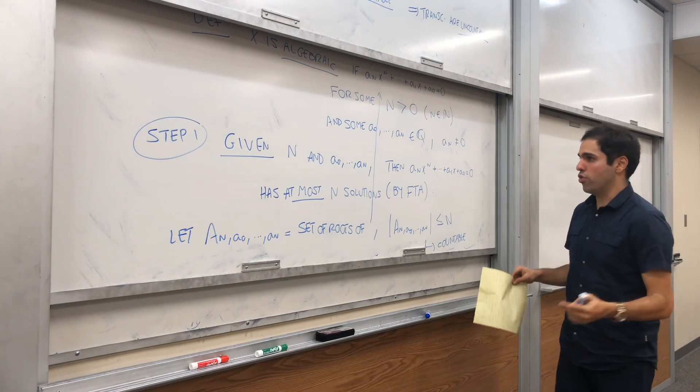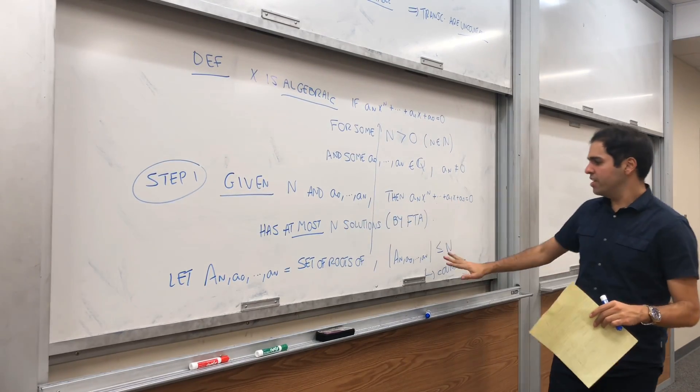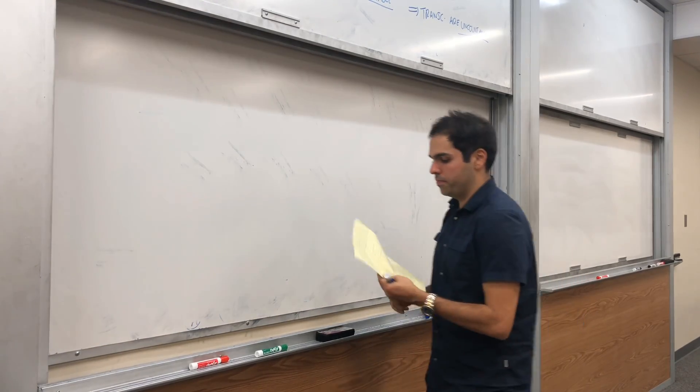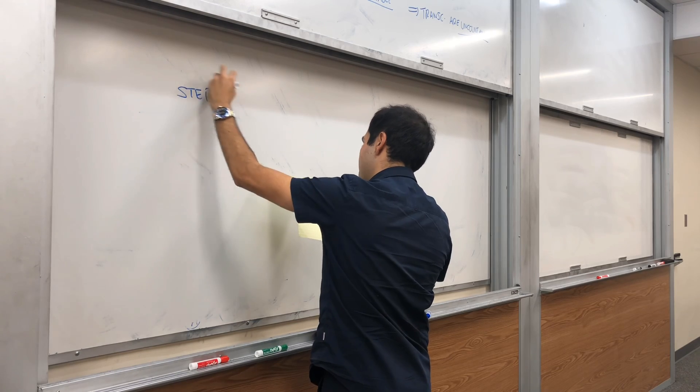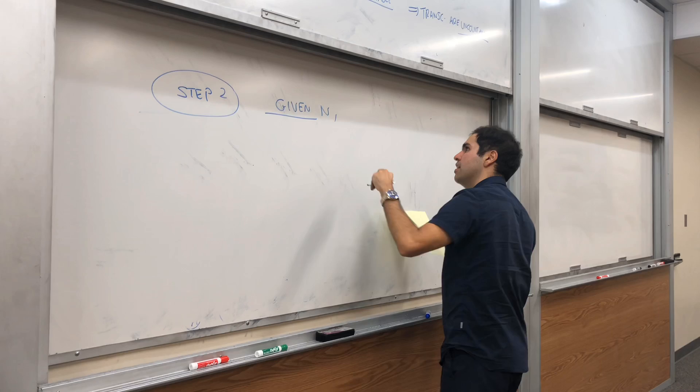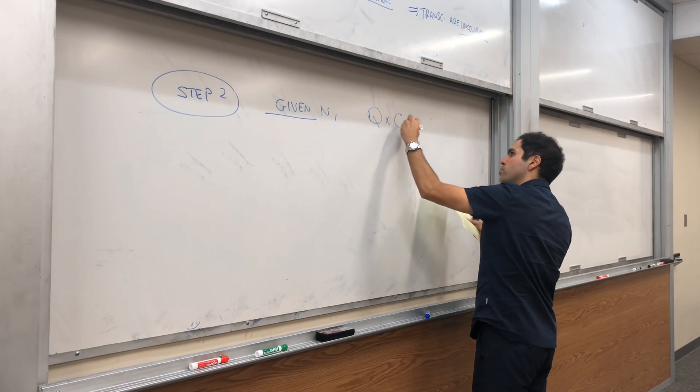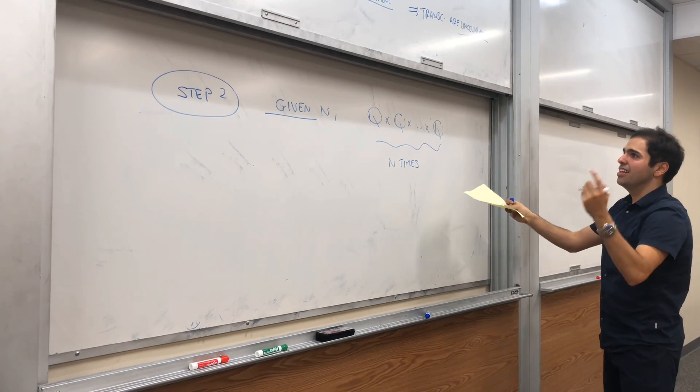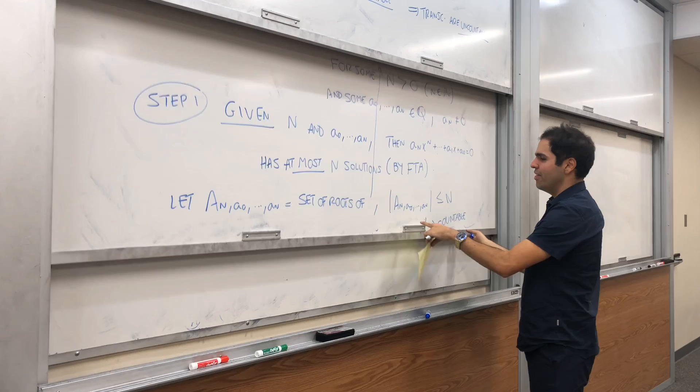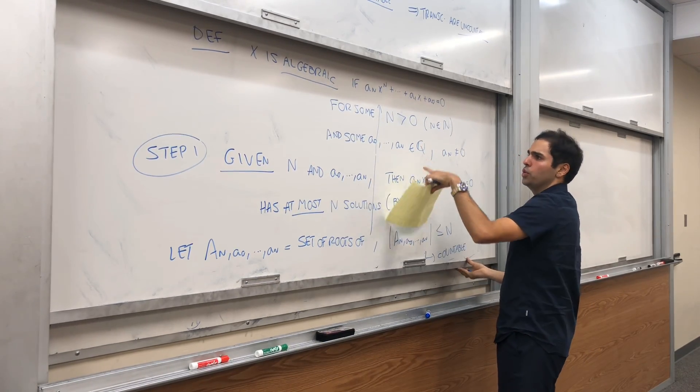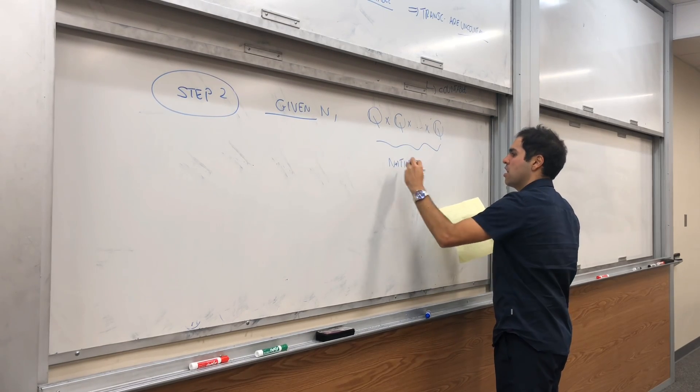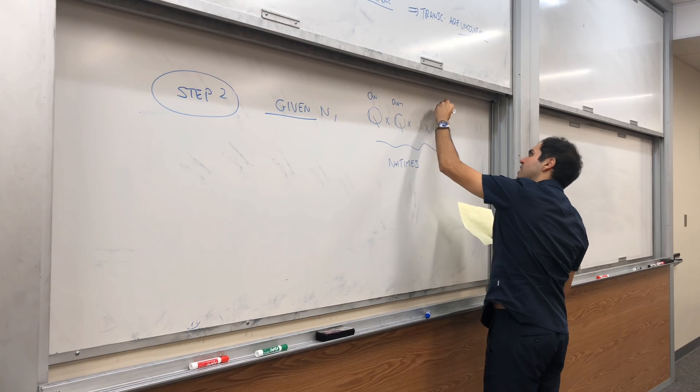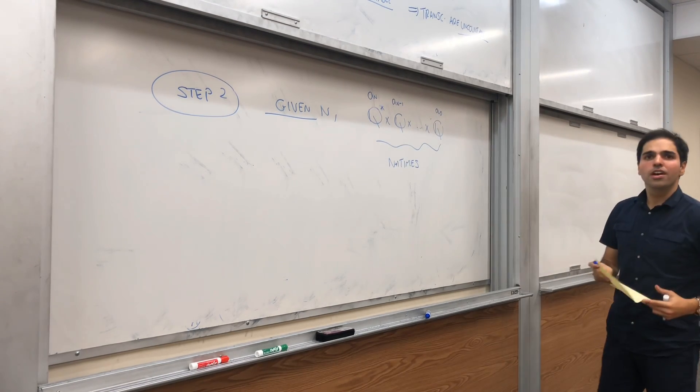Now, we would like to go a step further. Given n and n coefficients, this is countable. Now, suppose we just fix n. The question is, how many coefficients are there? So step two. Given n, consider the following set: Q cross Q cross dot dot dot cross Q, n times. Why do I consider that? Because if you look at this definition, we have that a_0 up to a_n, they're all in Q. So I guess n plus 1 times. So this is the set of (a_n, a_{n-1}, ..., a_0). And maybe I should put a Q star just to specify that it's non-zero.